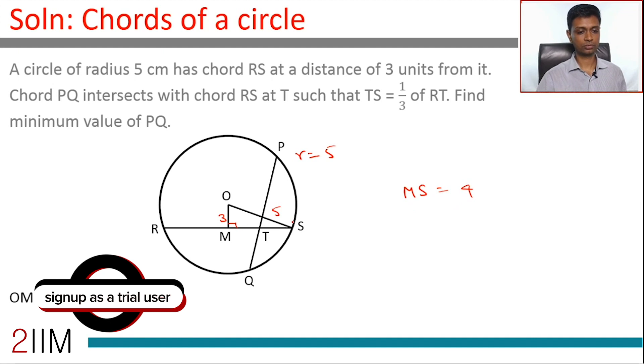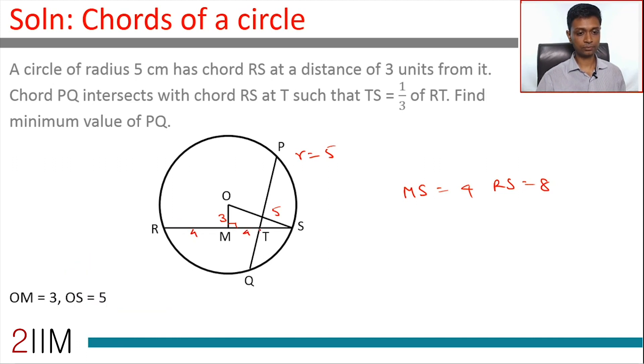OS is 5, this is 90 degrees, so straight away we know that MS is 4. This is a right angle triangle 3-4-5, so RM is 4, MS is 4, RS is equal to 8.